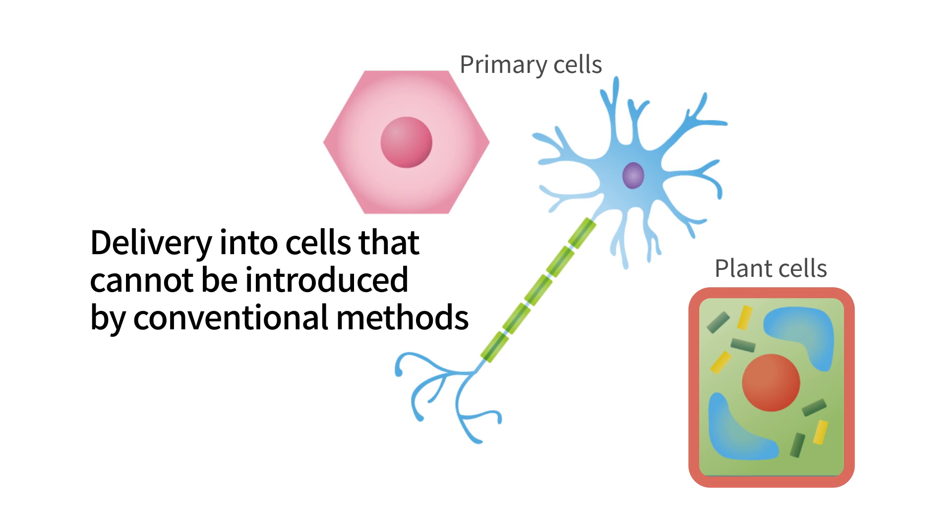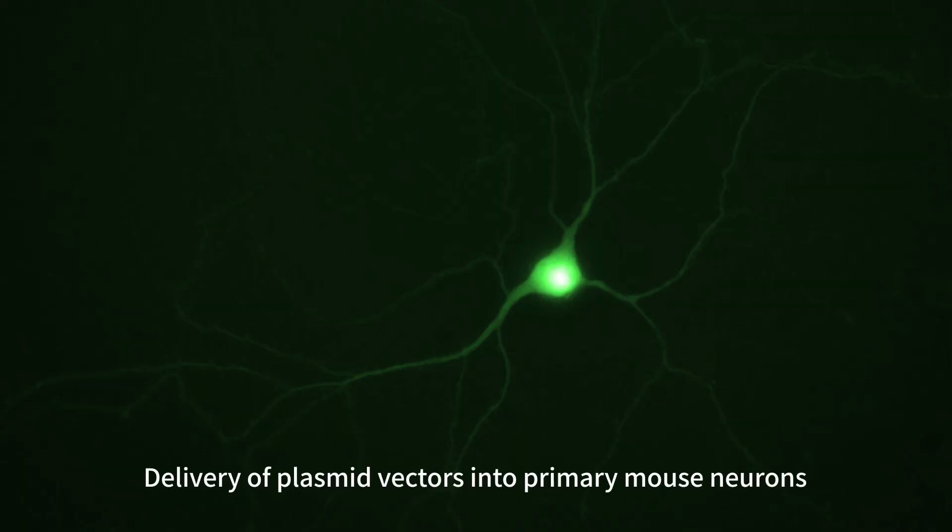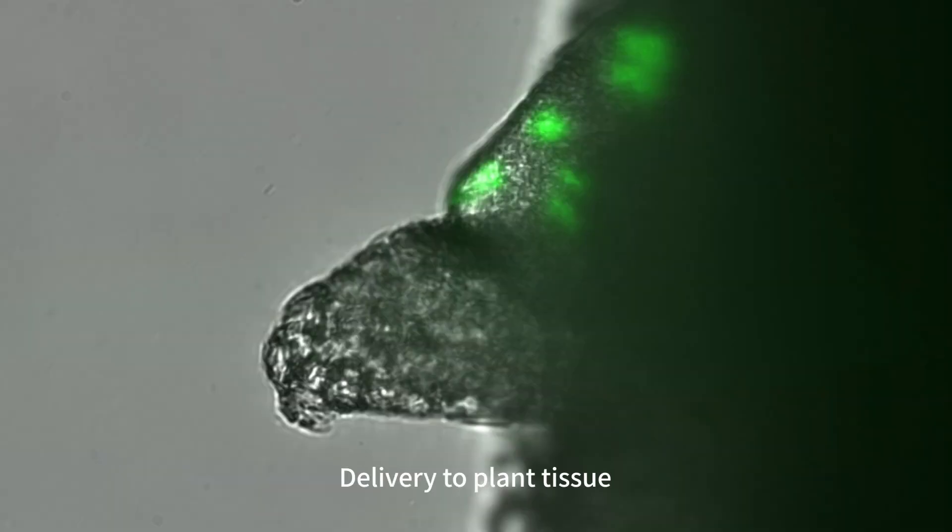Even normally difficult cell types can effectively have materials delivered intracellularly by the SU-10, such as primary nerve cells or the shoot apical meristem of plant tissue.